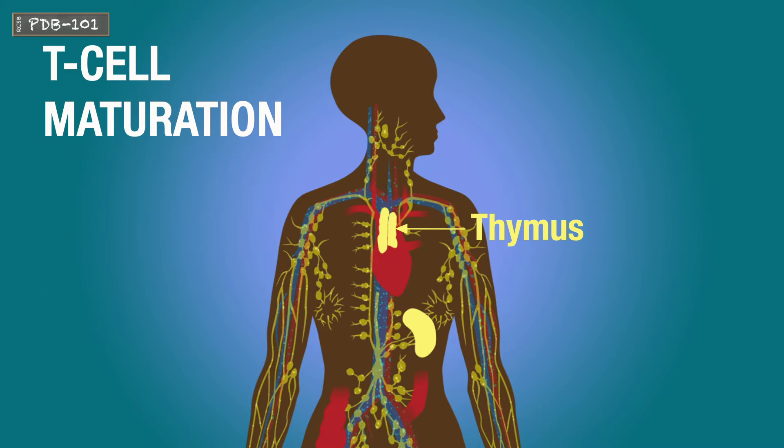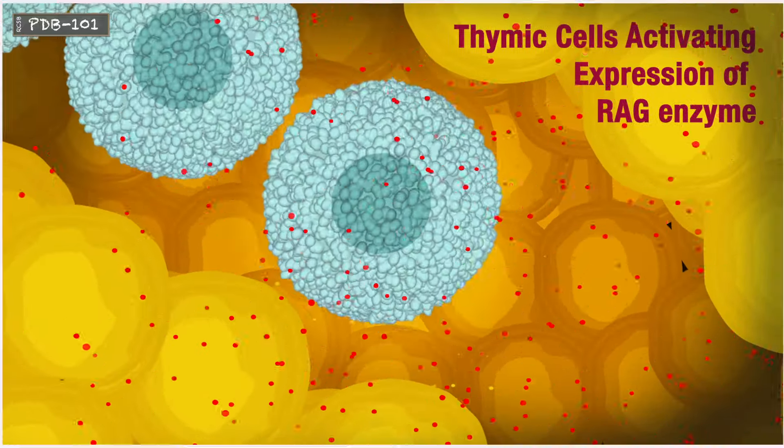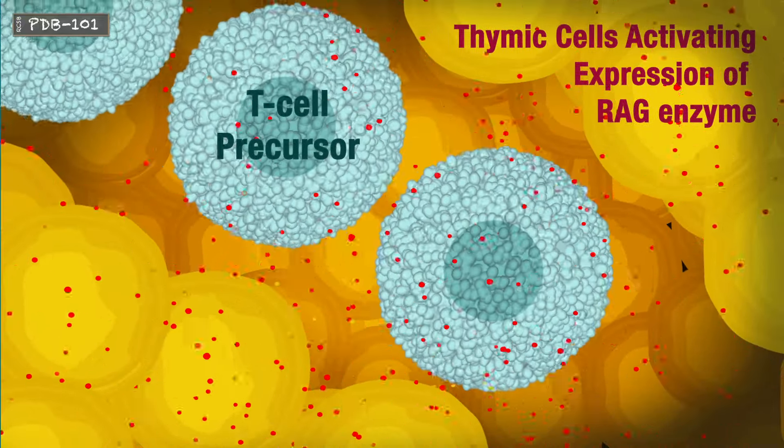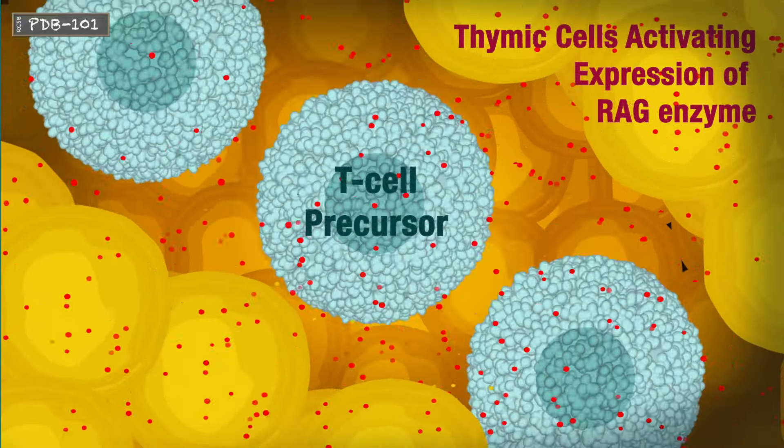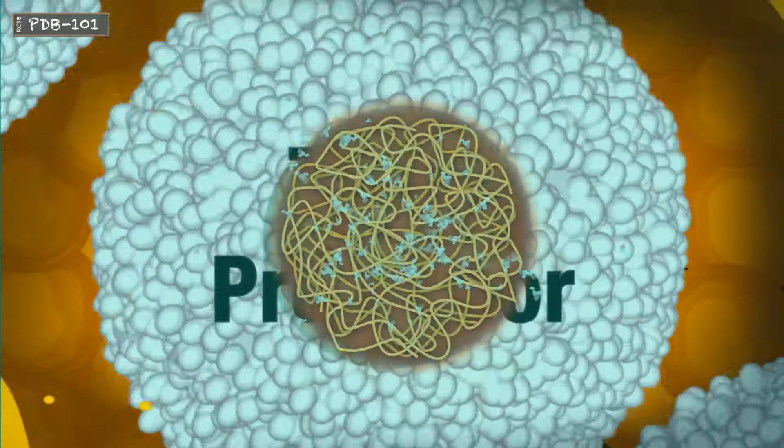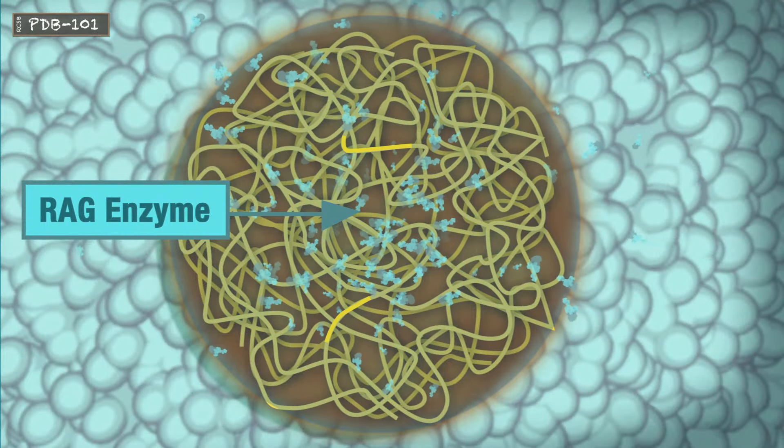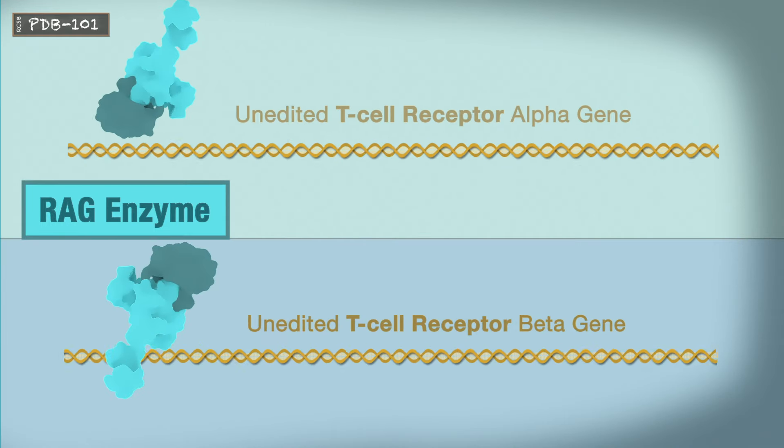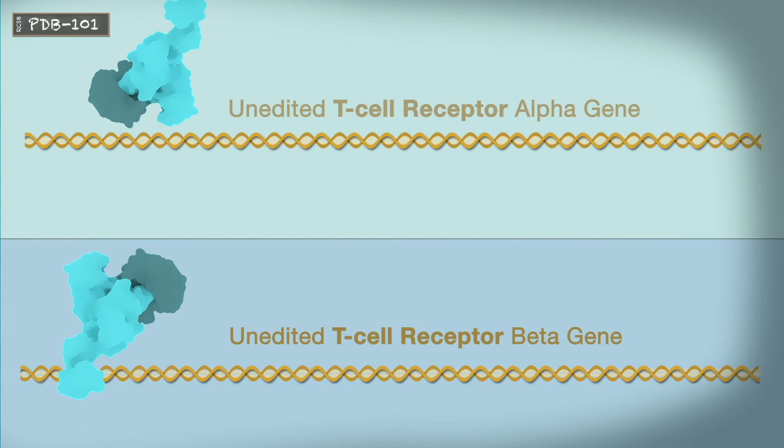T cells undergo maturation in the thymus gland, the central hub of the lymphatic system. Through a complex selection process, each T cell generates a highly specific T cell receptor, or TCR.